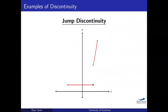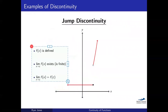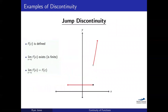For the jump discontinuity: f(c) is defined — there's a point there. But the limit: I have a left and a right sided limit approaching two different points, so the left and right limits are not equal, and therefore the limit does not exist. The second condition fails. I don't even need to check the third condition — the limit doesn't exist, so it can't equal the function value. That's the jump discontinuity.